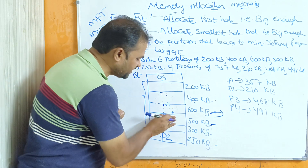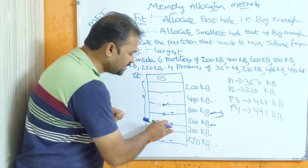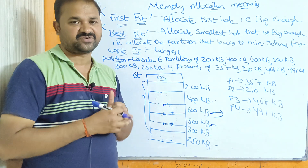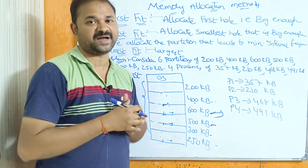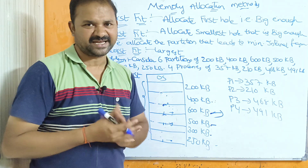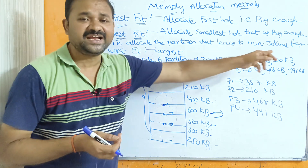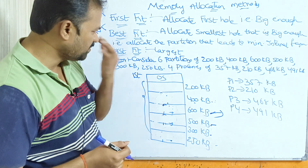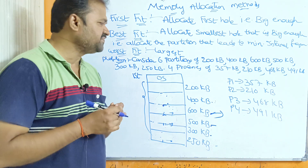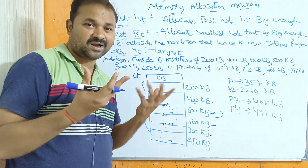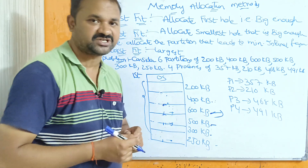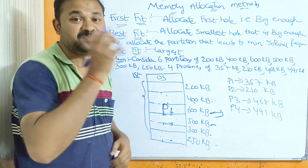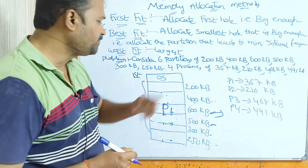Now let us see worst fit. Worst fit is the reverse of best fit. Best fit allocates the smallest hole that is big enough, whereas worst fit allocates the largest hole that is big enough. Out of all the partitions, we allocate the biggest partition, which gives more internal fragmentation. For P1 (357 KB), the largest partition is 600 KB, so we store P1 in the 600 KB partition.